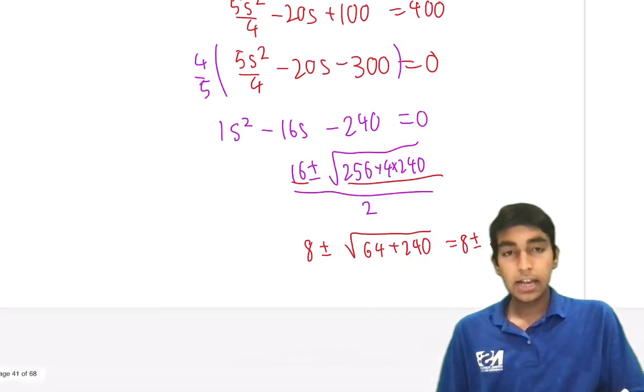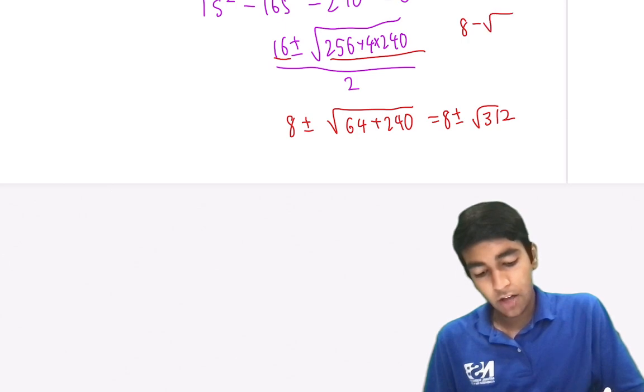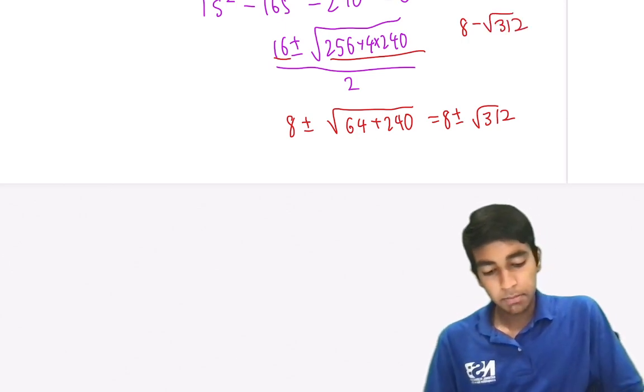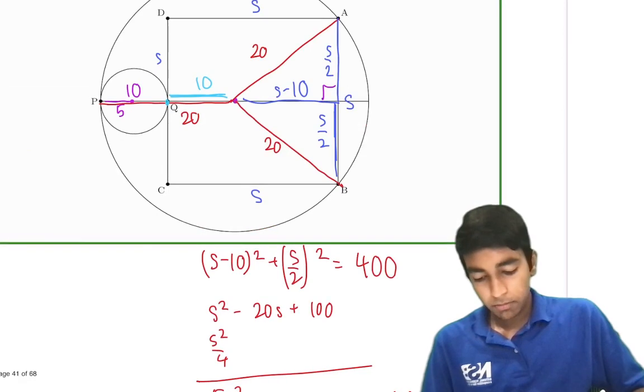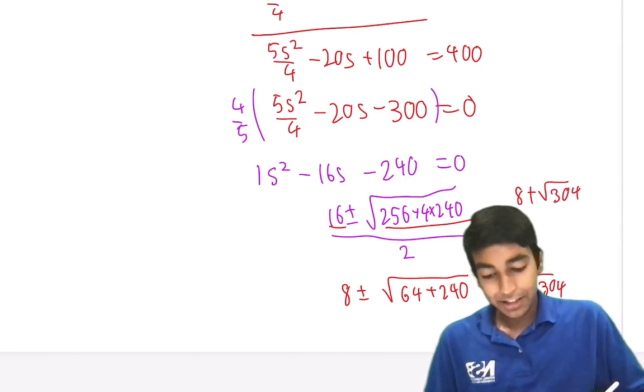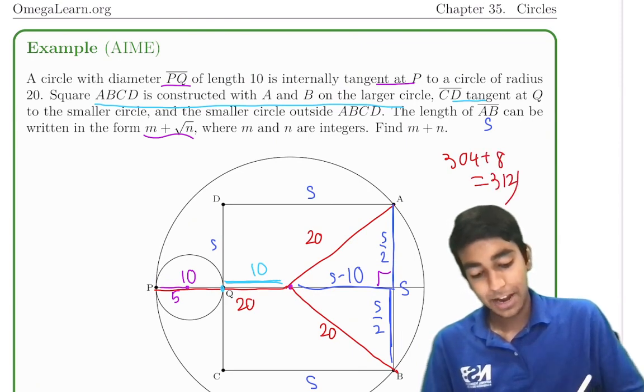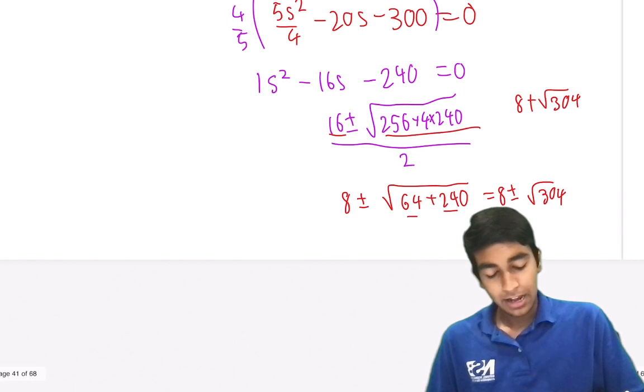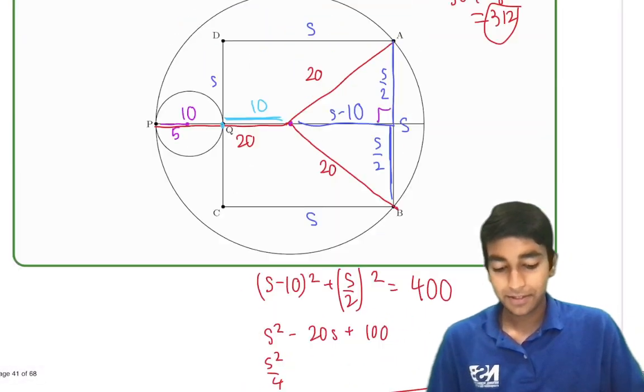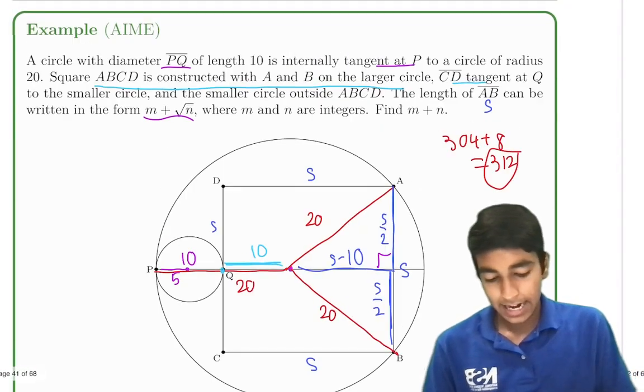So this is just 8 plus or minus root 304. And root 304 is way bigger than 8. So 8 minus square root 304 is not a possibility for sure. It has to be plus. So 8 plus square root 304. The answer is 304 plus 8 equals 312. So 240 plus 64 is 304. And then we added up 304 and 8 to get 312. So the length of AB is 8 plus square root 304. And the answer is 312.